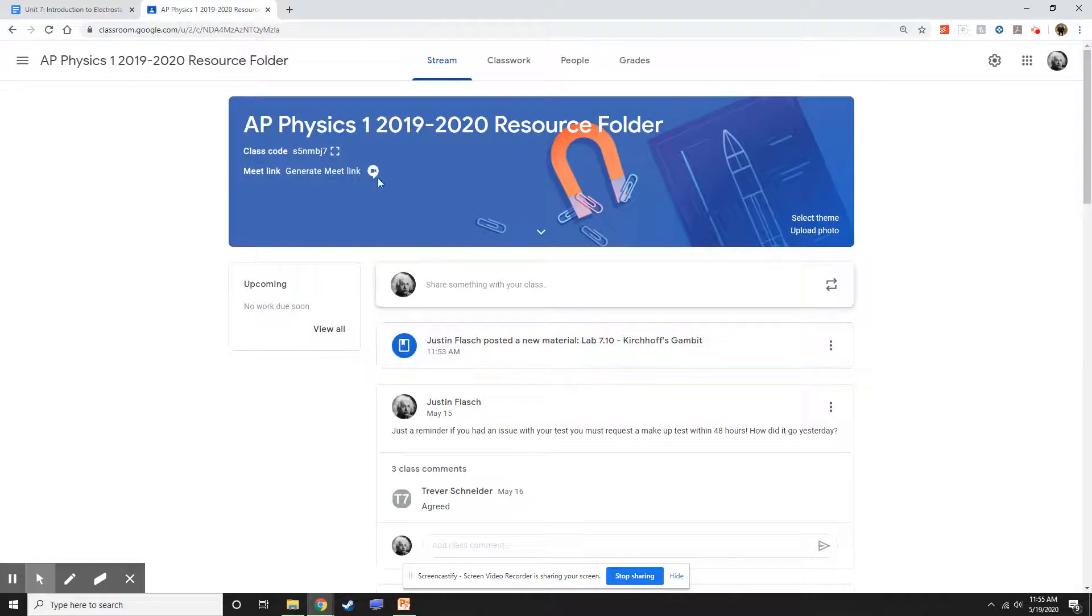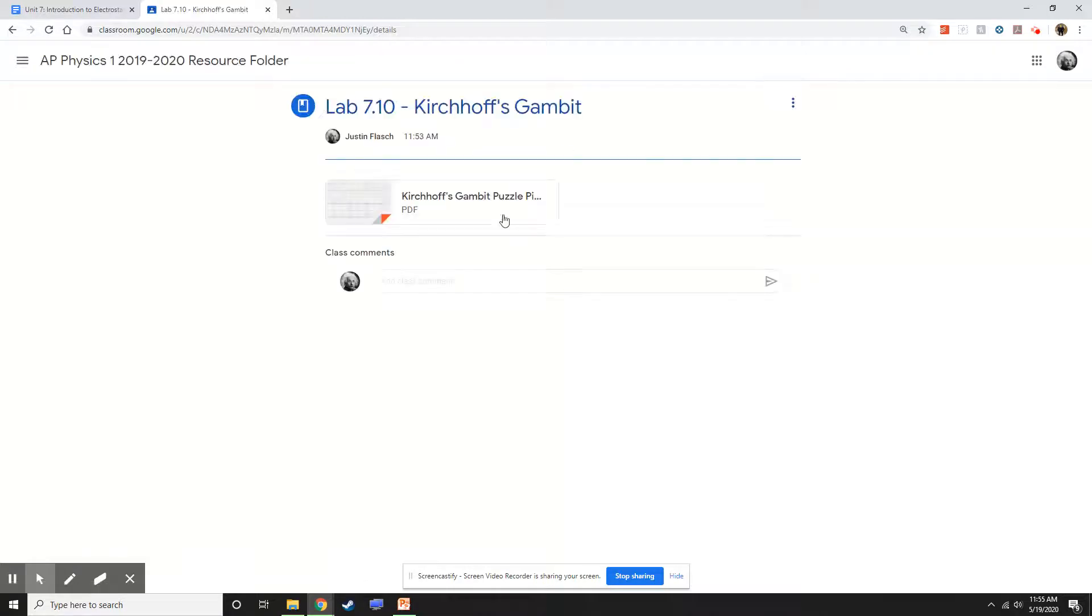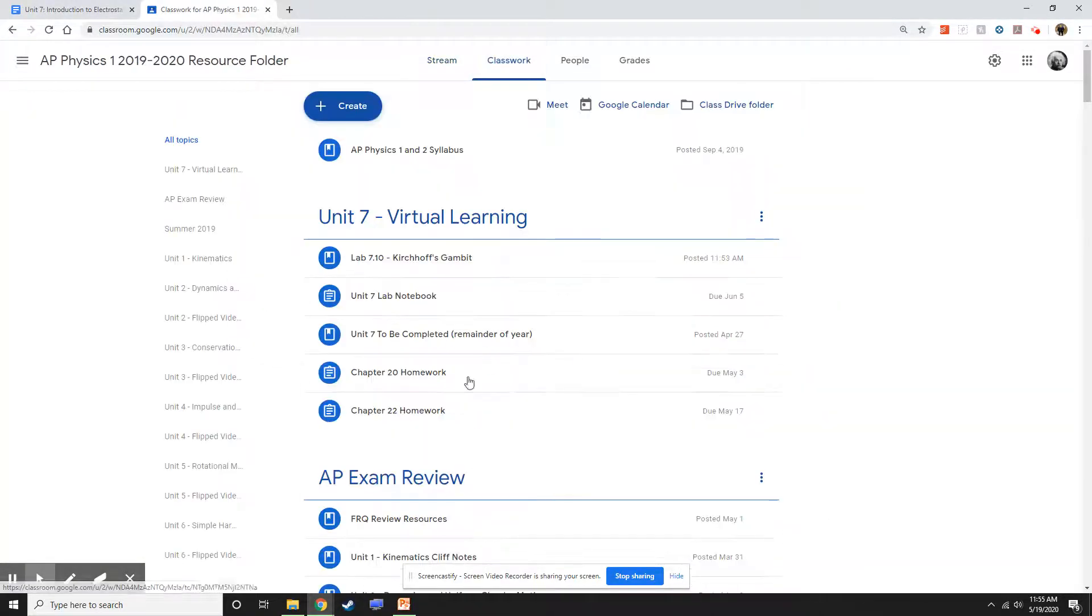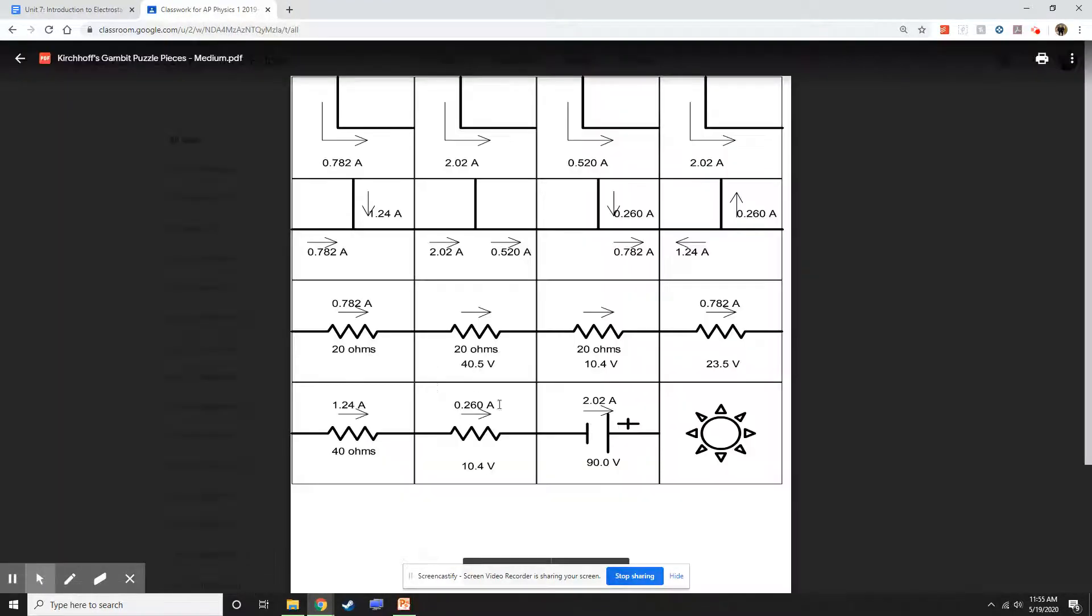In the AP Physics 1 class folder, there is a link right here. Otherwise, you can go into the Classwork tab, and there is a link right here. All you got to do is open this up and print it off.